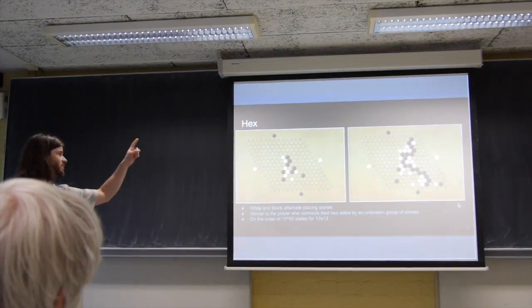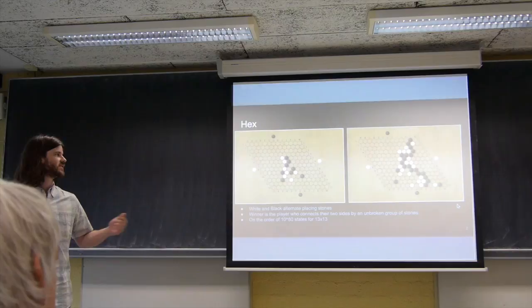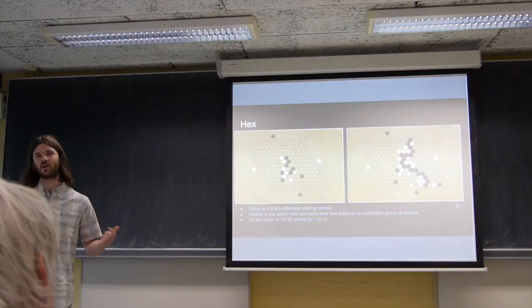The top and bottom sides try an unbroken chain of stones, and white wants to do the same thing with left and right. So whoever does that first is the winner. And in fact, you can say if one player does connect their two sides, the geometry of the board will prevent the other player from being able to connect. So the first is actually redundant. It's just whoever connects.